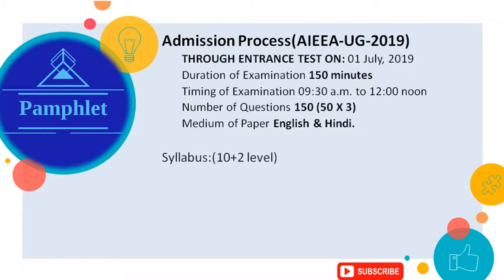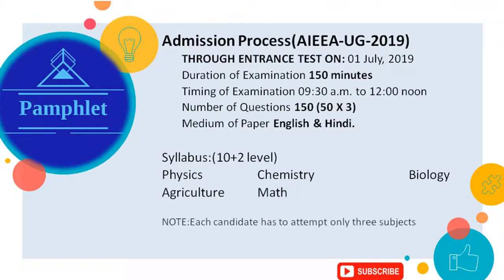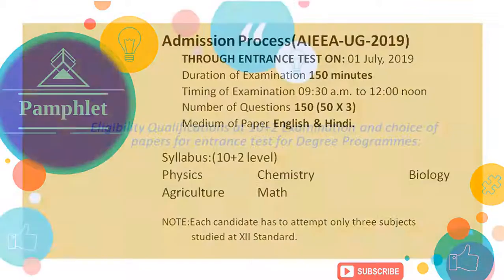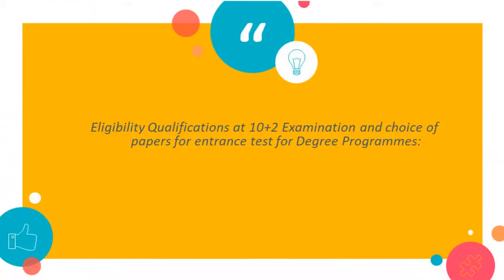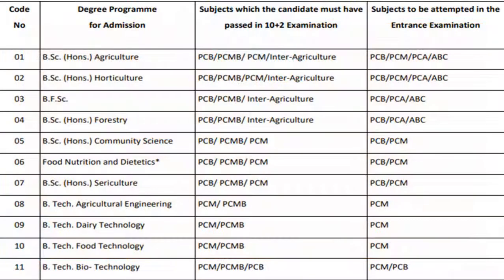Syllabus: 10+2 level of Physics, Chemistry, Biology, Agriculture, and Math. Note: Each candidate has to attempt only 3 subjects. Eligibility qualifications at 10+2 examination and choice of papers for entrance test for degree programs — pause the video and take a look.